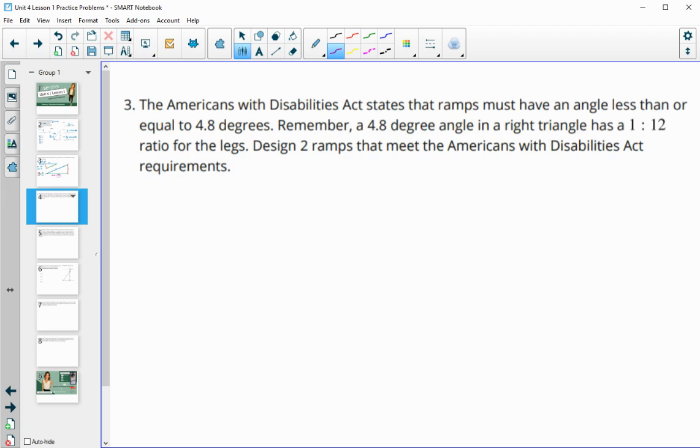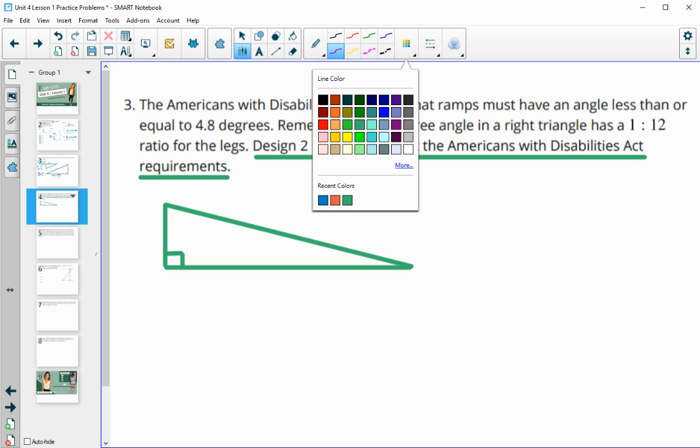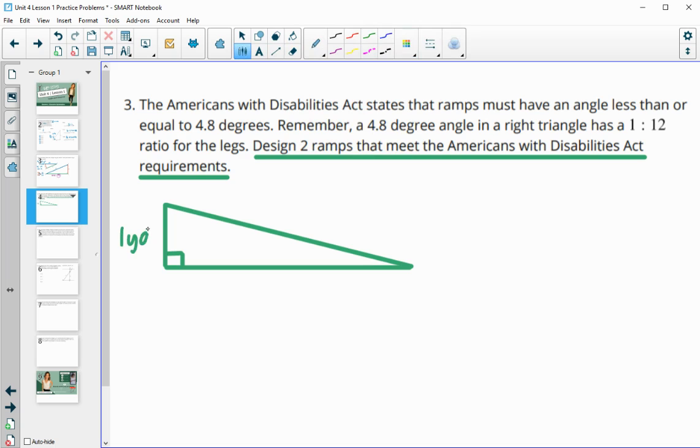Number three asks you to design two ramps that meet the ADA standards. So meaning that the ratio of the height to the length needs to be less than or equal to 1/12. So you can do kind of anything you want. You just got to make sure that when you compare the measurements that you used, that they meet the ADA guidelines. So if I do this one and I say this is one yard, this one has to be at least 12 yards. So if I put 13 yards, that's going to be fine because one over 13 is less than the 1/12 requirement. So there's one that works.